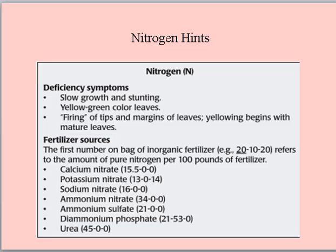Nitrogen hints. Deficiency symptoms: slow growth and yellowing-green color leaves, firing of tips and marking of leaves. Yellowing begins with mature leaves.